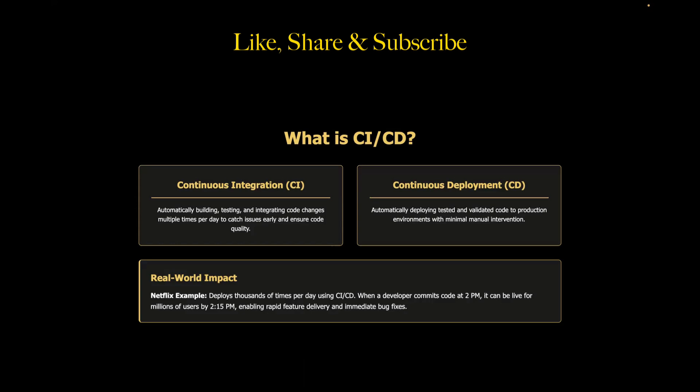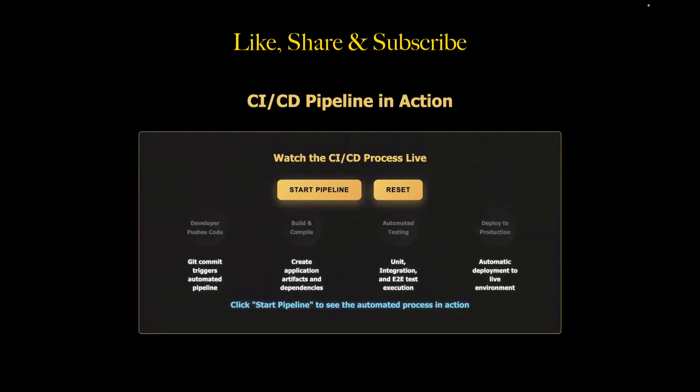Let me show you how exactly a CI/CD pipeline works. Understanding this process is important for any QA interview. Step 1 is developer pushes the code — a developer makes a change and commits the code into Git, and this single action triggers everything that follows. Step 2 is build and compile — the system automatically grabs that code, builds the entire application, and creates all the necessary artifacts. No human activity is involved here.